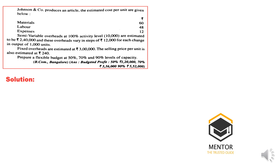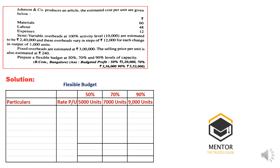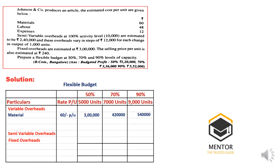At 50% capacity we produce 5,000 units, at 70% we produce 7,000, and at 90% we produce 9,000 units. We divide expenditure into variable, semi-variable, and fixed categories. Material at ₹60 per unit: 5,000 × 60 = ₹3,00,000; 7,000 × 60 = ₹4,20,000; 9,000 × 60 = ₹5,40,000. Labor at ₹48 per unit and expenses at ₹12 per unit are similarly calculated for all three capacity levels.